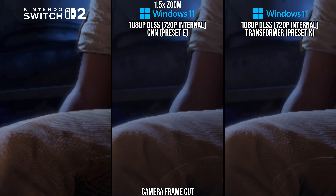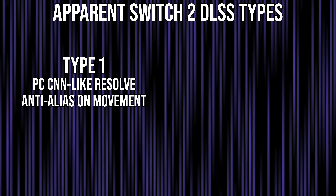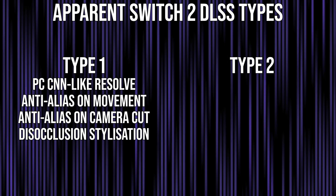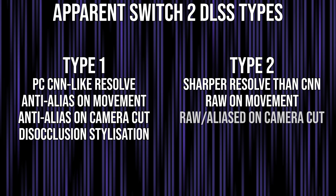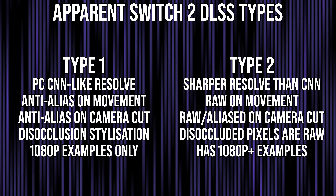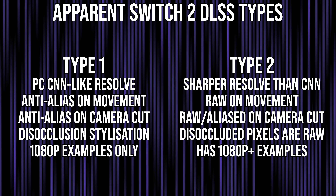Based on the titles examined so far, we see two distinct types of DLSS resolve becoming apparent. We have the first type in Cyberpunk 2077 or Street Fighter VI, which have hallmark characteristics like found in DLSS on PC — specifically the CNN model. Then we have a second type with Hogwarts Legacy or Star Wars Outlaws that do not have the characteristics of PC DLSS. It is important to note that Hogwarts Legacy is also reconstructing up to 1440p output, which in theory should be quite expensive if Switch 2 was using PC's CNN DLSS type.